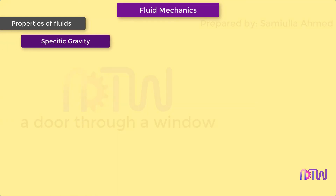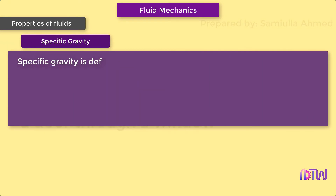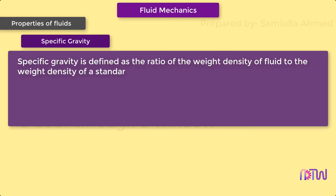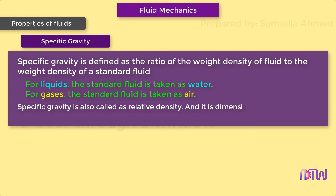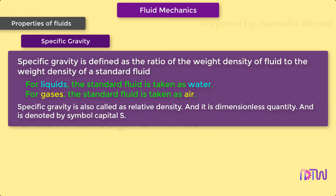Specific gravity is defined as the ratio of the weight density of a fluid to the weight density of a standard fluid. For liquids, the standard fluid is taken as water, and for gases, the standard fluid is taken as air. Specific gravity is also called relative density. It is a dimensionless quantity and is denoted by the symbol capital S.